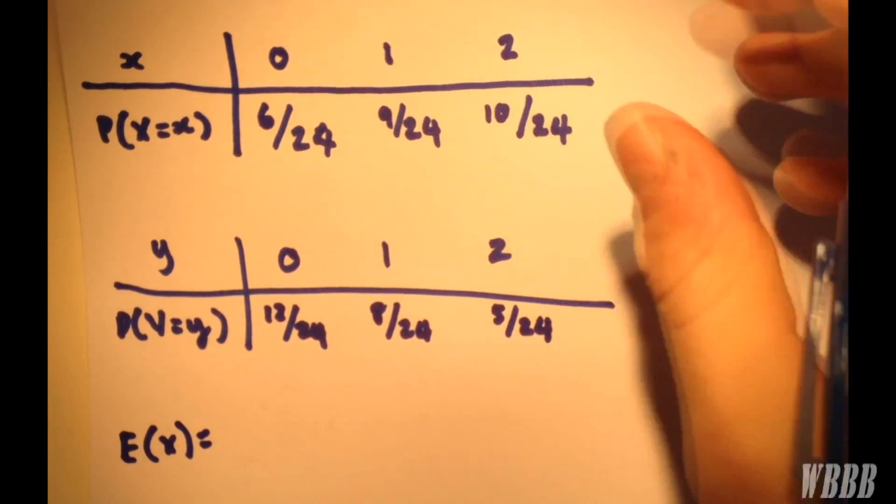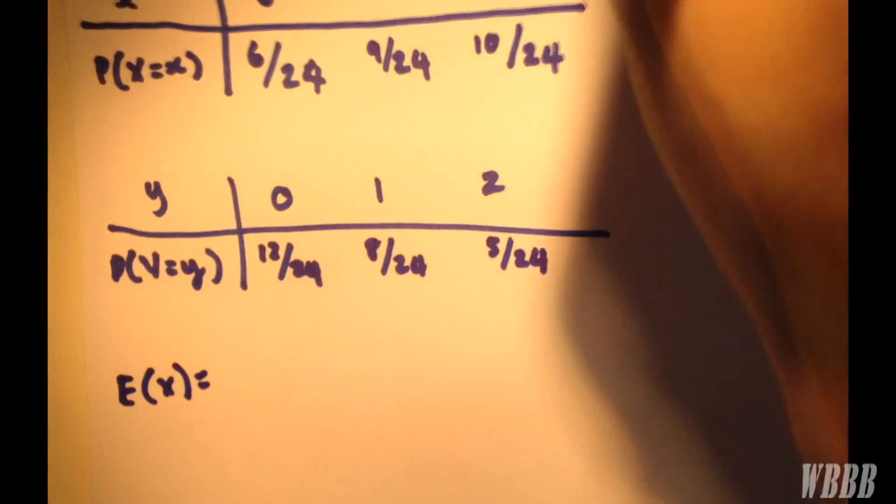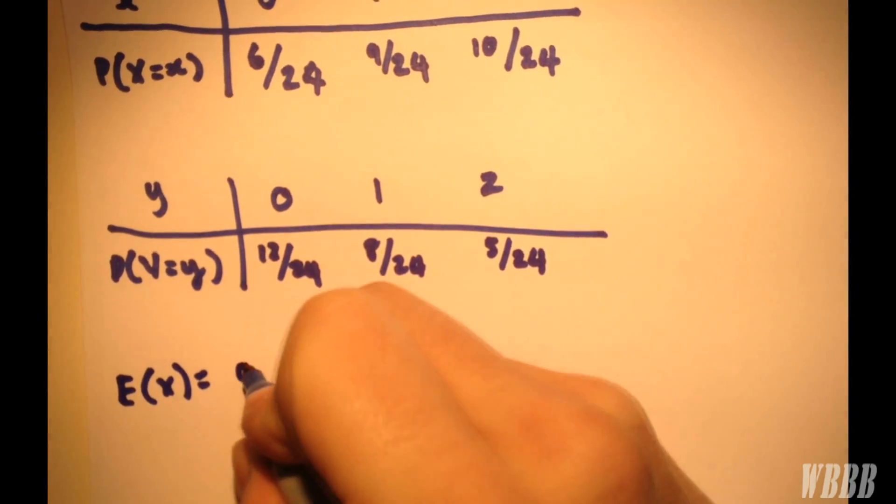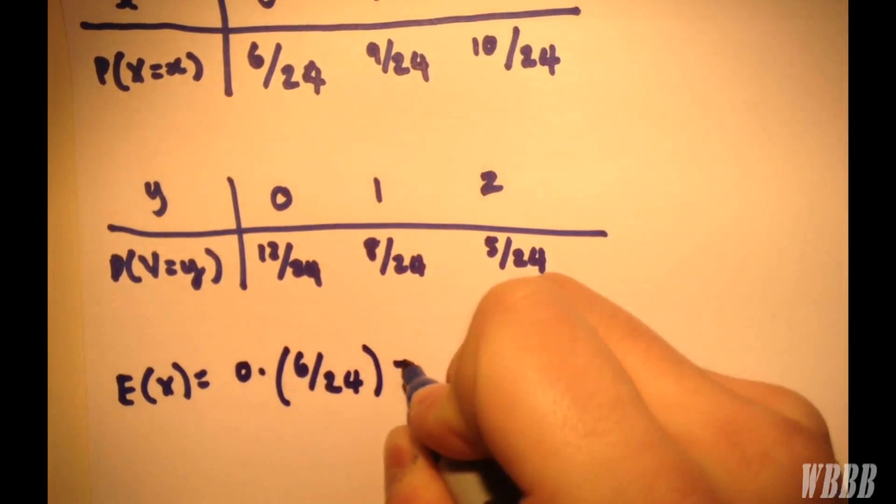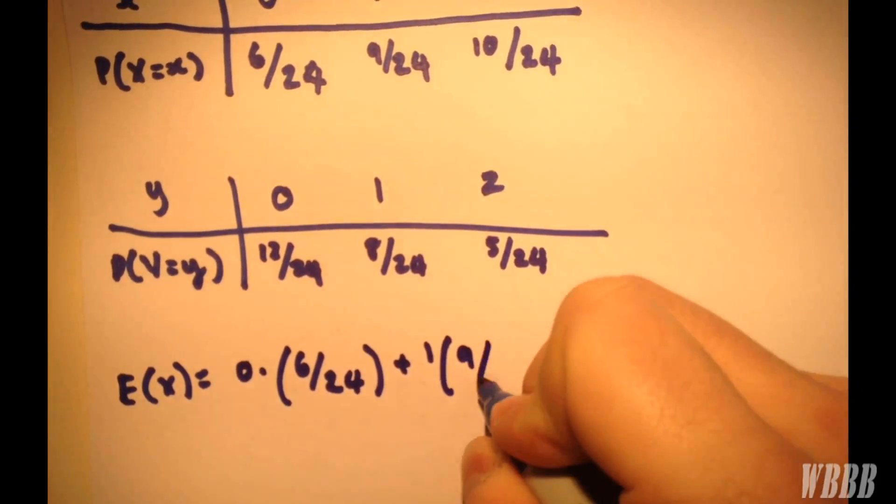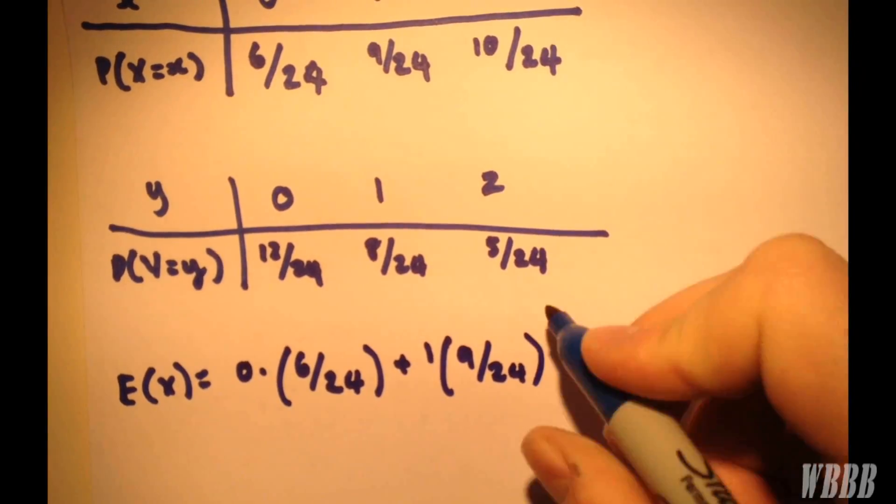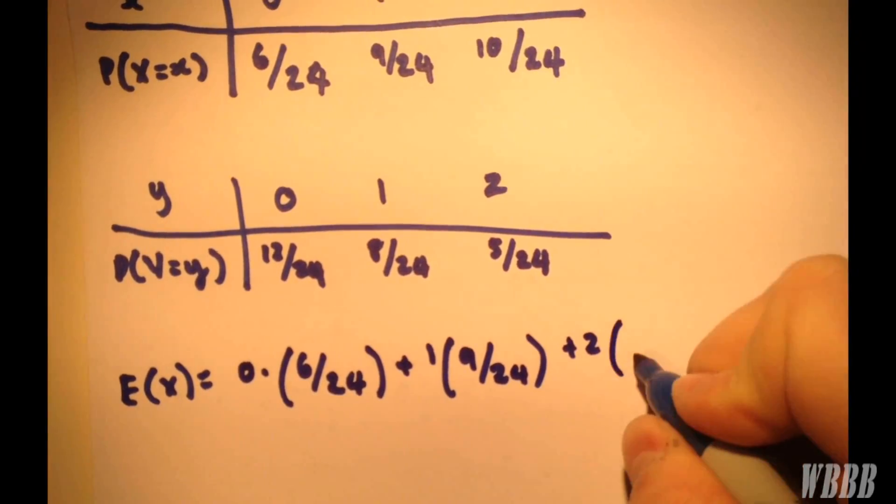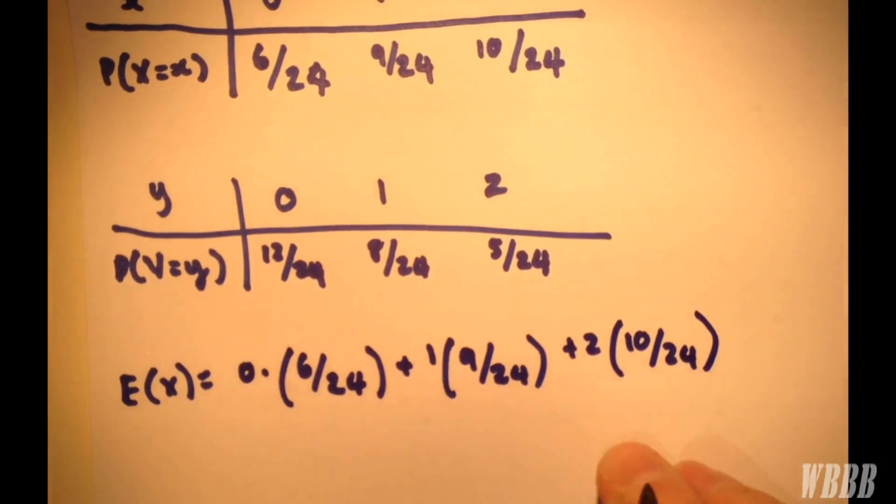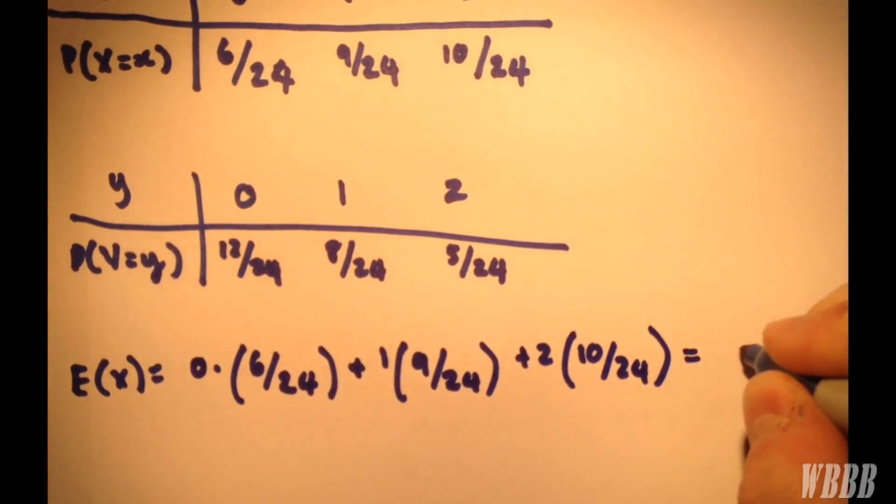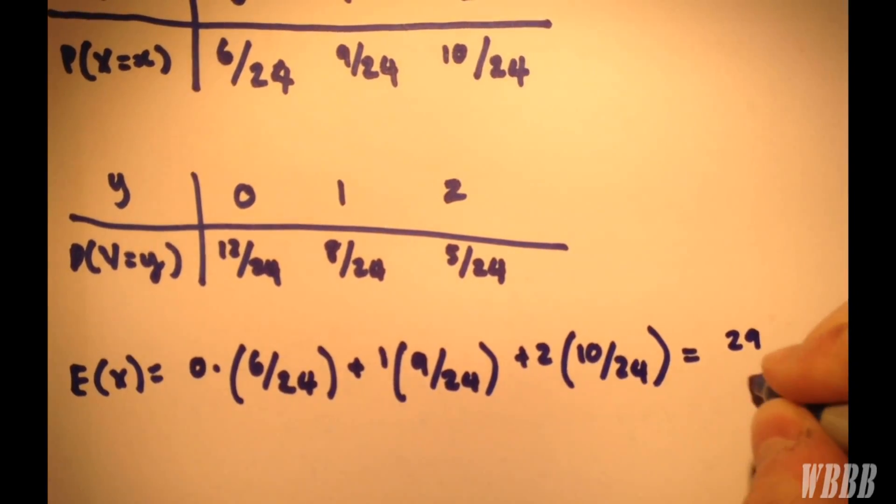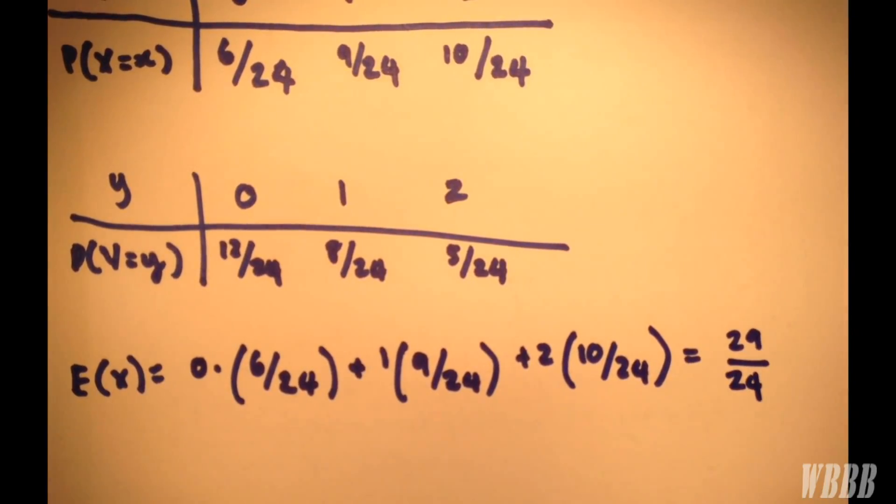So simply, the corresponding value is there. So plus 1, plus 2. And that gives us a nice answer of 29 over 24.